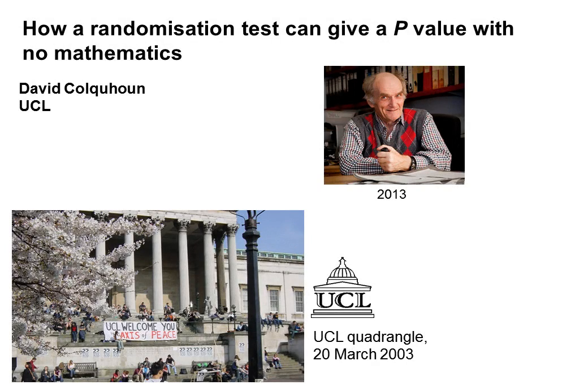This is a very short slideshow, only six slides, which describes how you can do a randomization test to give you a p-value with no mathematics at all. It applies to the sort of data that you might normally do a student's t-test on, but it's a lot better than a student's t-test because it doesn't make any assumptions about the distribution of the observations. Heaven knows why people still do t-tests, in fact.